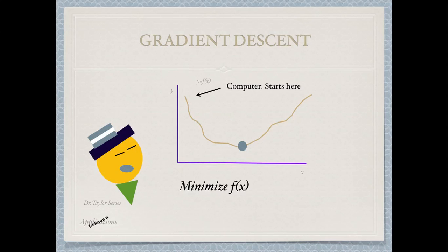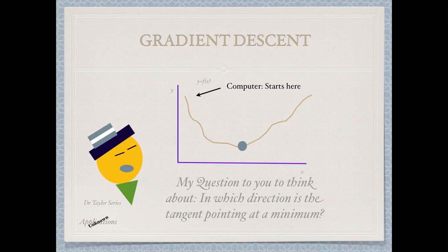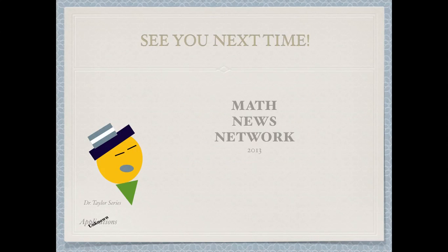Before I leave you today, I would like to ask you one question to think about: in which direction would the tangent be pointing at a local minimum? Would it be pointing up? Would it be pointing down? Or is it just pointing horizontally? That is something you can think about. Thank you for joining us today, and see you next time!